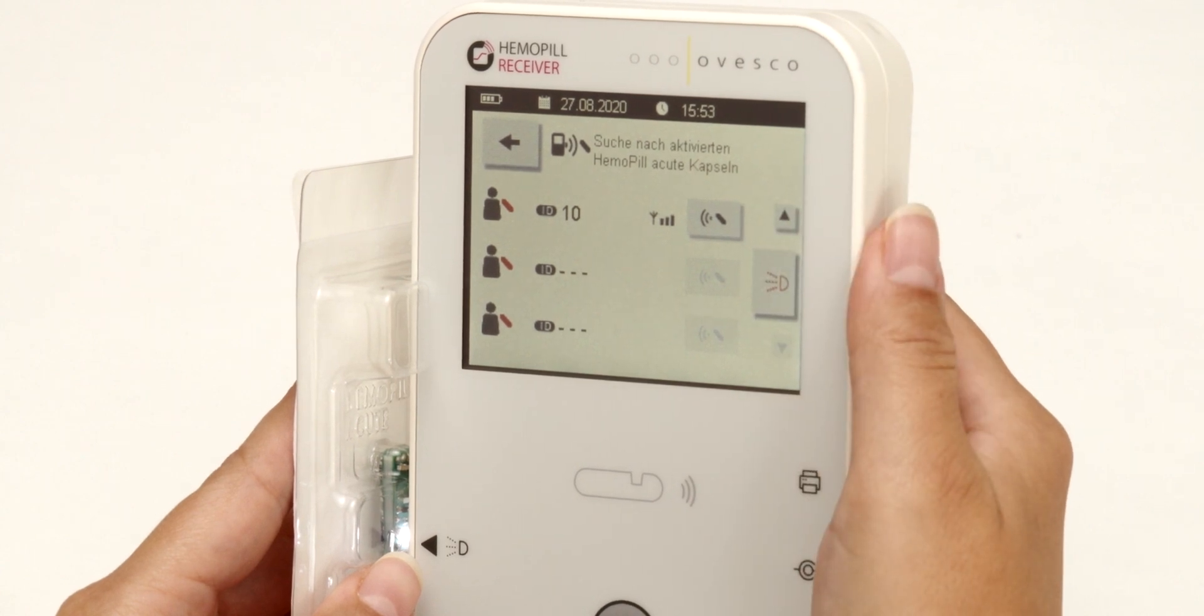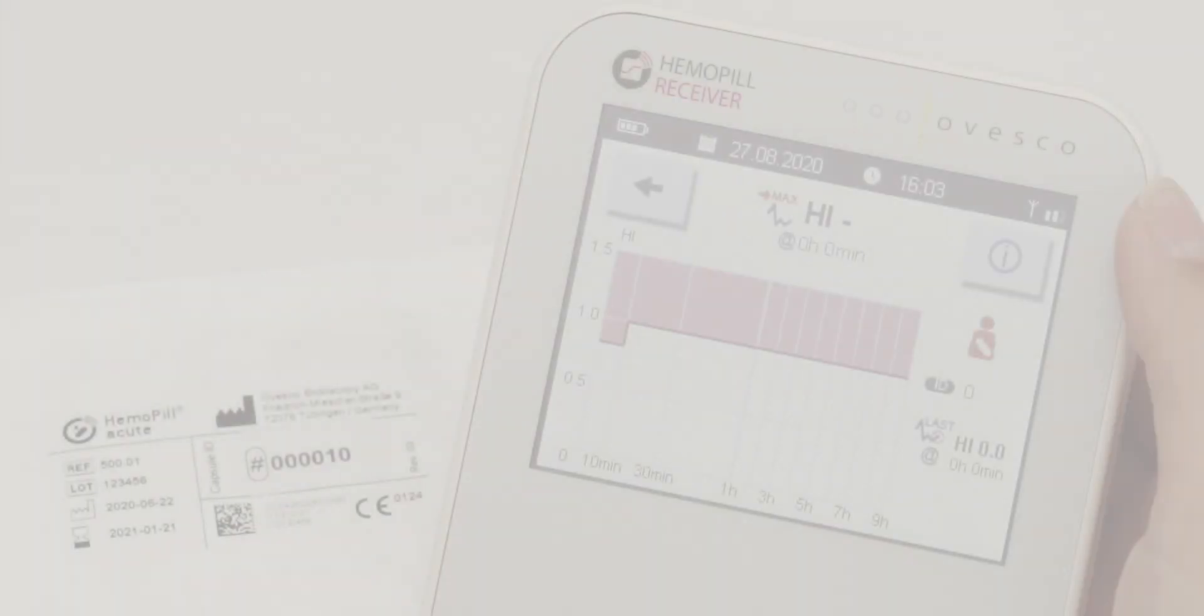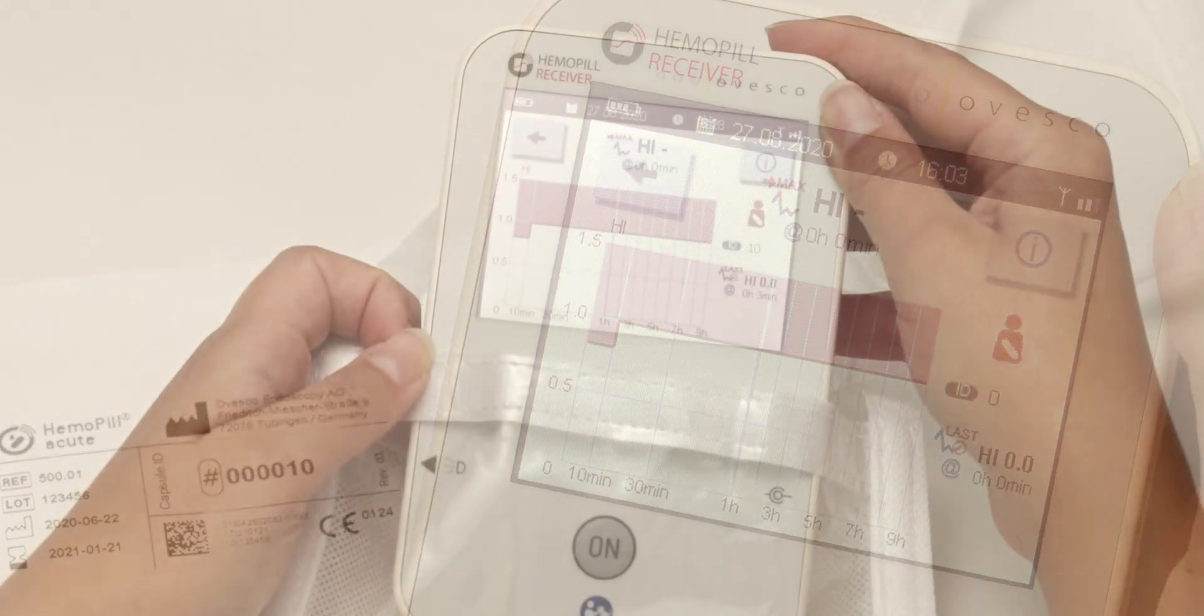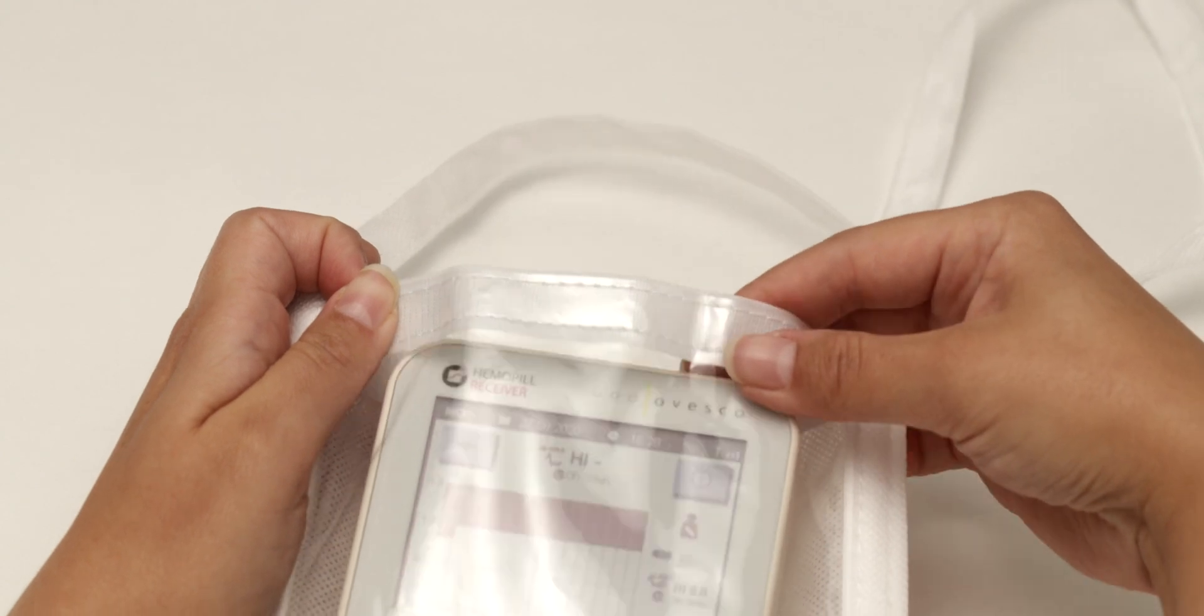Once the connection between the capsule and the receiver has been established, the measurement screen appears. With the enclosed pouch, the receiver can be positioned on the patient's stomach.